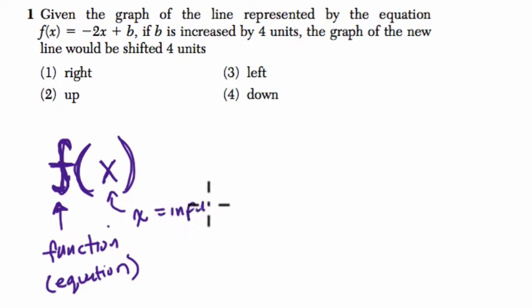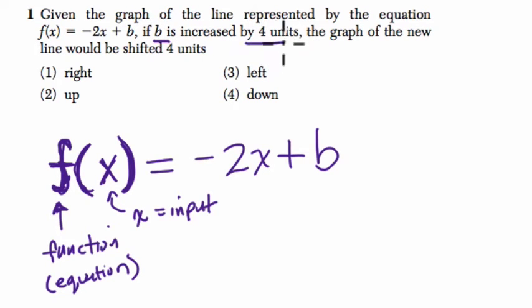Now I know this might seem, if you haven't seen this notation before, a little cumbersome, a little ridiculous, but it's actually quite useful. It tells us the name of the function and what the function is based upon just by writing a couple of symbols. And this equals negative 2x plus b. So if b is increased by 4 units, the graph of the new line would be shifted 4 units which way?